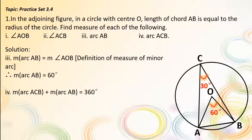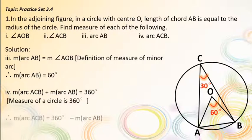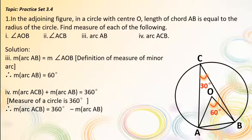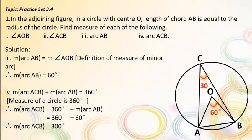Fourth, the measure of a circle is 360°. Therefore, measure of arc ACB + measure of arc AB = 360°. Therefore, measure of arc ACB = 360° − measure of arc AB = 360° − 60°. Therefore, measure of arc ACB = 300°.